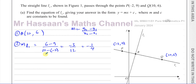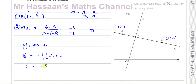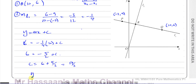Now we have enough information to find the equation of L1. Using y = mx + c with point Q(10, 6) and gradient −1/4: substitute to get 6 = −(1/4)(10) + c, which gives 6 = −5/2 + c. So c = 6 + 5/2 = 12/2 + 5/2 = 17/2. Therefore the equation is y = −(1/4)x + 17/2.